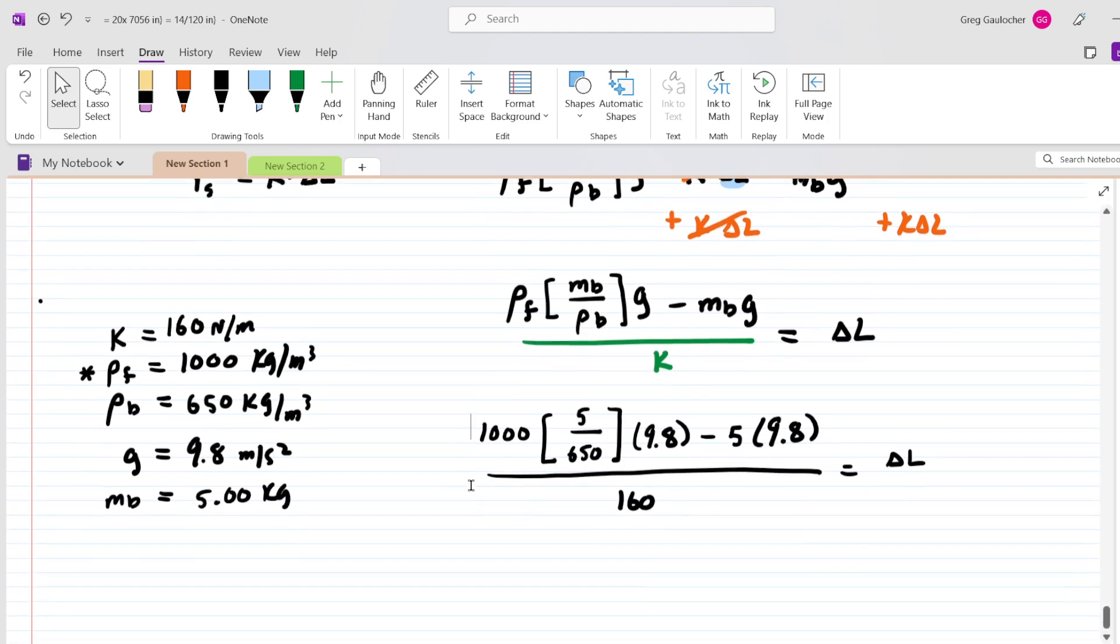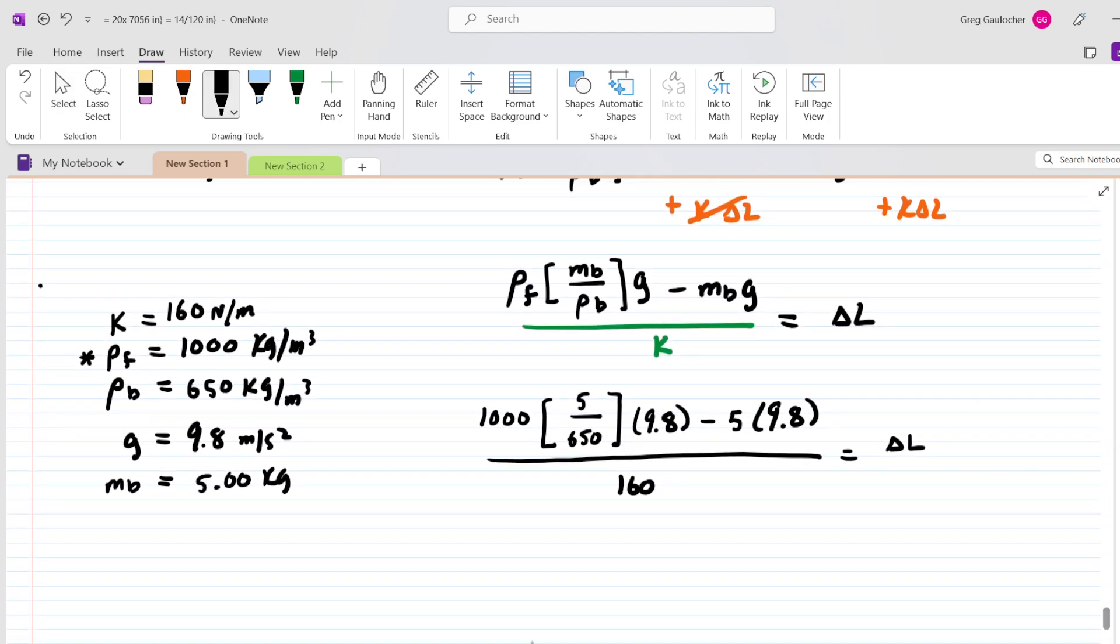We have omitted units for the sake of clarity. When you carefully punch this into a calculator, you should get approximately 0.165. And because we have calculated an elongation, which is a length, this would come out into a standard unit of meters.